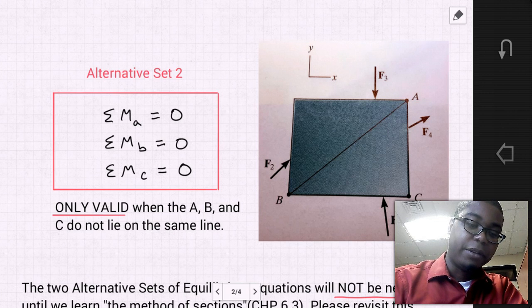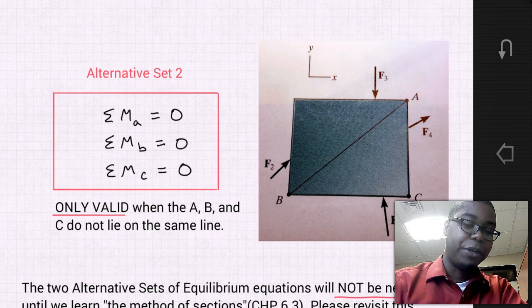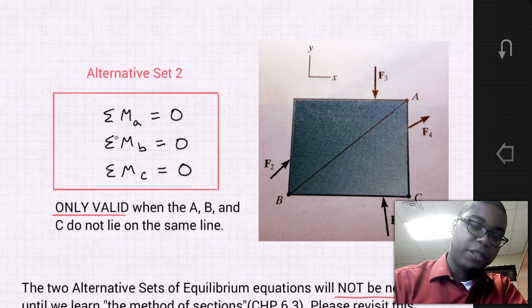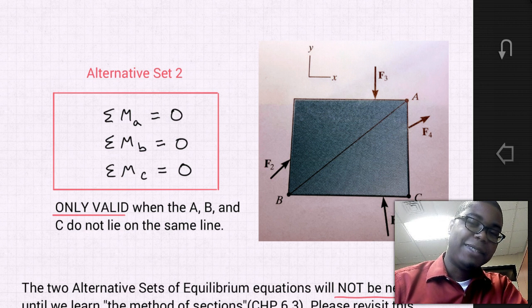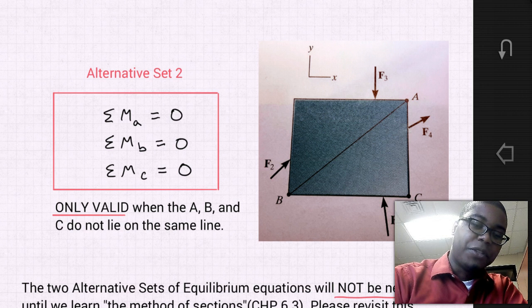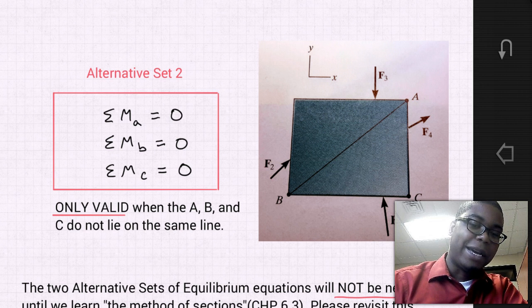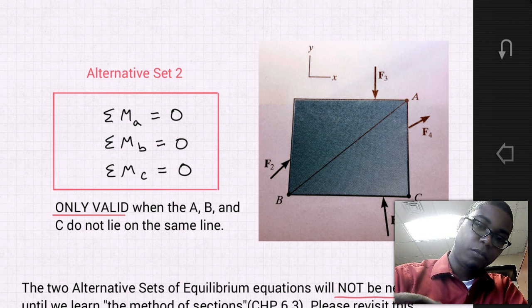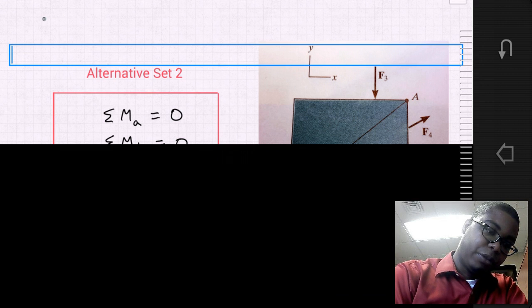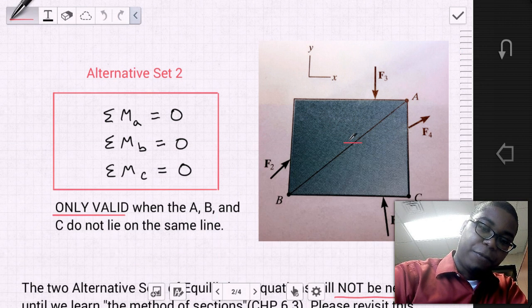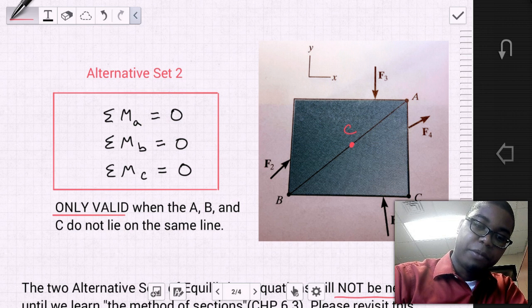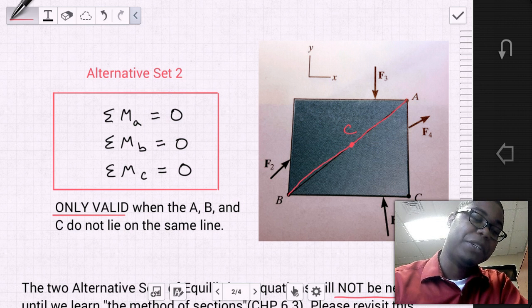Another alternative set is the three-moment equation set. In this case, we do the sum of the moments at A equal to zero, the sum of the moments at B equal to zero, and the sum of the moments at C equal to zero. This alternative set is only valid when A, B, and C do not all lie on the same line. If C were on the same line as A and B, we would not be able to use this set.